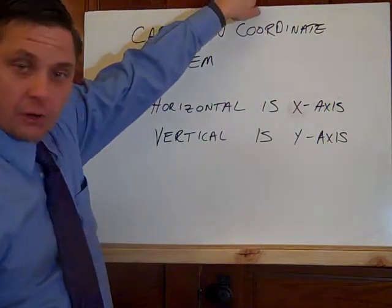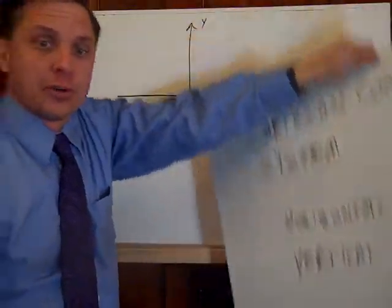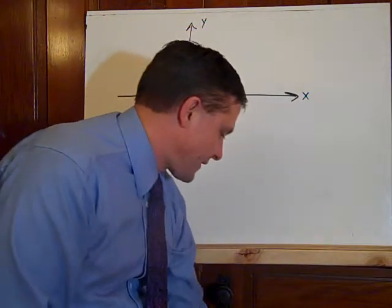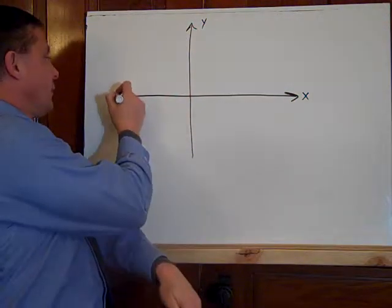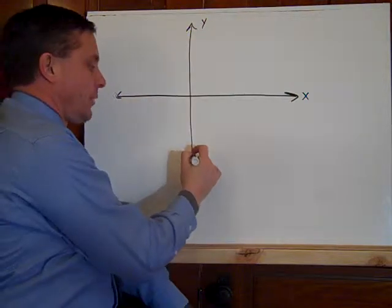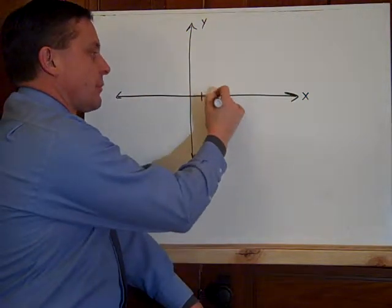And we're just going to go through and describe some of the terms that go with this. So like I said, x-axis is horizontal and it goes on forever, y-axis is vertical. The scale I'll use is each tick mark will be one.